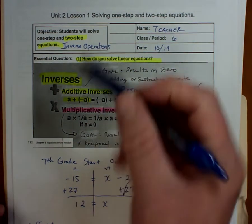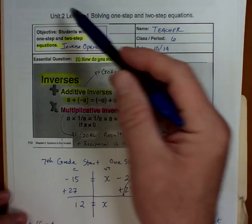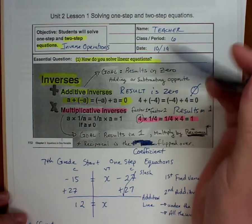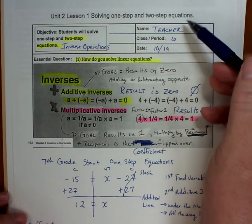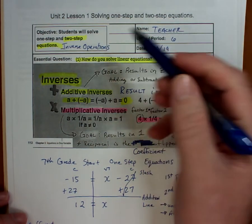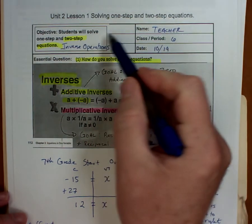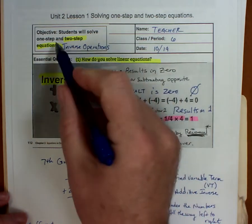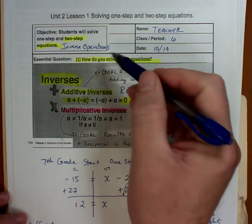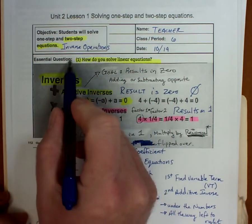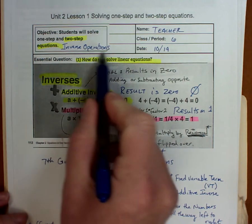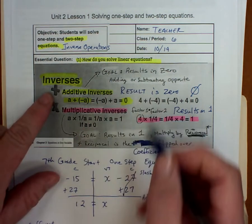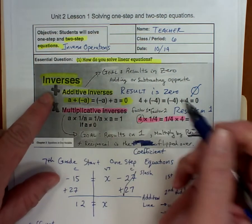Hello and welcome to Unit 2 Lesson 1, Solving 1-Step and 2-Step Equations. This is a review of 7th grade standards. You do that by doing something called inverse operations, and there are two different inverse operations.